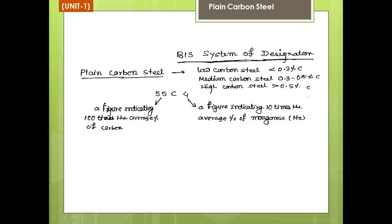Plain carbon steel is written as 55C4: 55 is 100 times the percentage of carbon, C is for carbon, and 4 is 10 times the percentage of manganese.